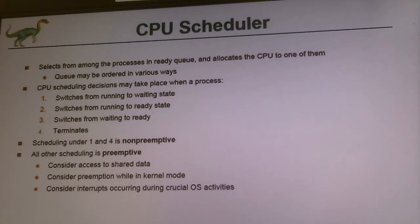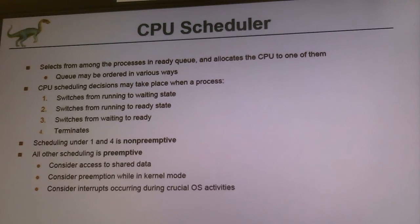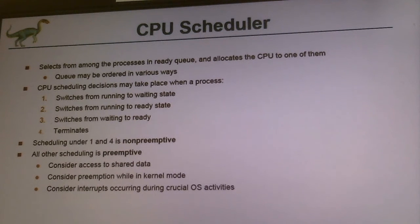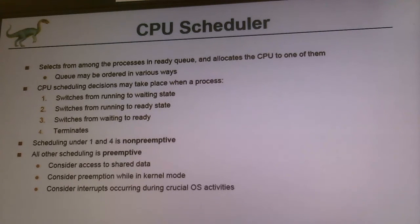What does a CPU scheduler do exactly? It selects from the ready queue which process will come first according to the algorithms. These four scheduling decision points are important because you don't really have to schedule the CPU all the time. For some specific situations, you don't need to use your scheduler or dispatcher to pick the right process from the ready queue.